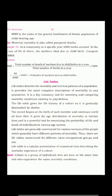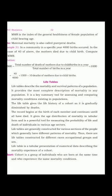Now coming to the last part of vital statistics, that is life tables. In life tables, the weightage is one or two marks — definitions for one mark and uses of life tables for two marks. Life table describes the mortality and survival patterns of a population. Technically, the life table gives the life history of a cohort as it is gradually diminished by deaths, providing detailed information about the life and death process of a particular population.